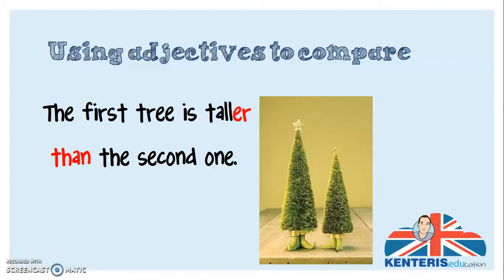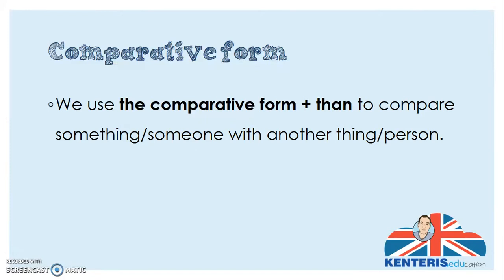What about if you want to compare one tree to another tree? We use the adjective tall, and we say the first tree is taller than the second one. Here you can see this adjective tall — we just add a suffix to the end, an -er. We use 'than', and it's taller than the second one. So we use the comparative form plus 'than' to compare something or someone with another thing or another person. It's a one-to-one comparison.